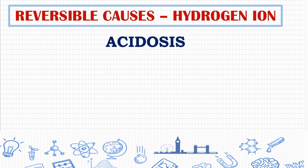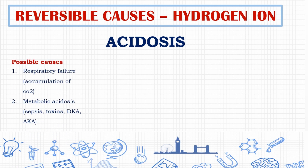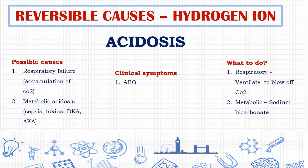The next reversible cause is accumulation of hydrogen ion, which we call acidosis. With increased hydrogen ion, the pH would be decreased. Possible causes include type 2 respiratory failure, where there is accumulation of CO2, and metabolic acidosis occurring due to sepsis, toxins, diabetic ketoacidosis, or alcoholic ketoacidosis. ABG can help rule out whether the acidosis is metabolic or respiratory in nature.